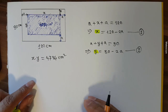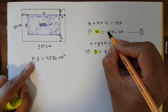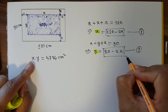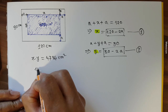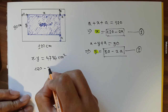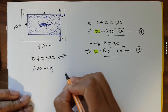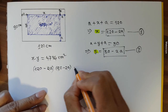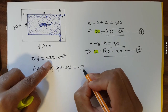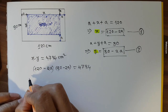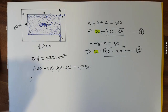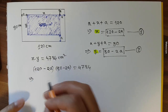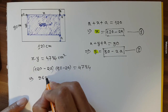Now I can substitute x and y using equation one and equation two. So x times y becomes: (120 minus 2a) multiplied by (80 minus 2a), which equals 4784.